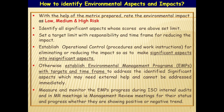Using the matrix, rate the environmental aspect on a scale — low, medium and high risk. Identify all significant aspects whose scores are above the set limit. Set a target limit with responsibility and timeframe for reducing the impact. Establish operation controls, i.e., procedures and work instructions, for eliminating or reducing the impact so as to make significant aspects into non-significant aspects. Otherwise, establish Environment Management Programs (EMPs) with targets and timeframe to address the identified significant aspects, which may need external help and cannot be addressed immediately. Measure, monitor, and evaluate the EMPs progress during ISO internal audits and in management review meetings for their progress — whether they are showing positive or negative trend — and take necessary corrective actions. Every department personnel should know what the significant aspects and EMPs pertaining to their department are, and their status.